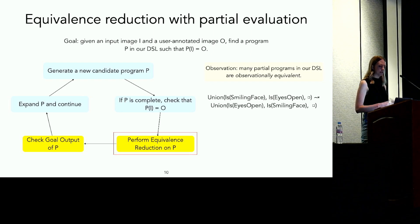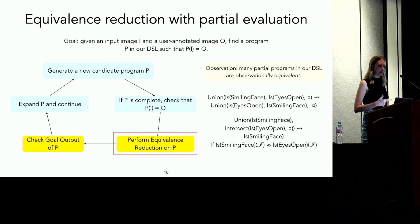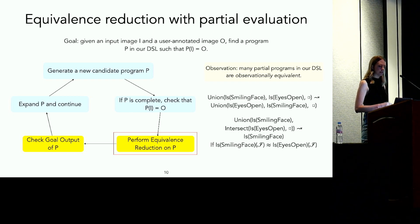We can also combine this technique with partial evaluation to make it more effective. For instance, in this second example, we have a partial program with complete subprograms is-smiling-face and is-eyes-open. Suppose that in the example images provided by the user, all of the smiling faces also have their eyes open. Then these two subprograms are observationally equivalent, and thus the overall program is equivalent to is-smiling-face by the set absorption law.